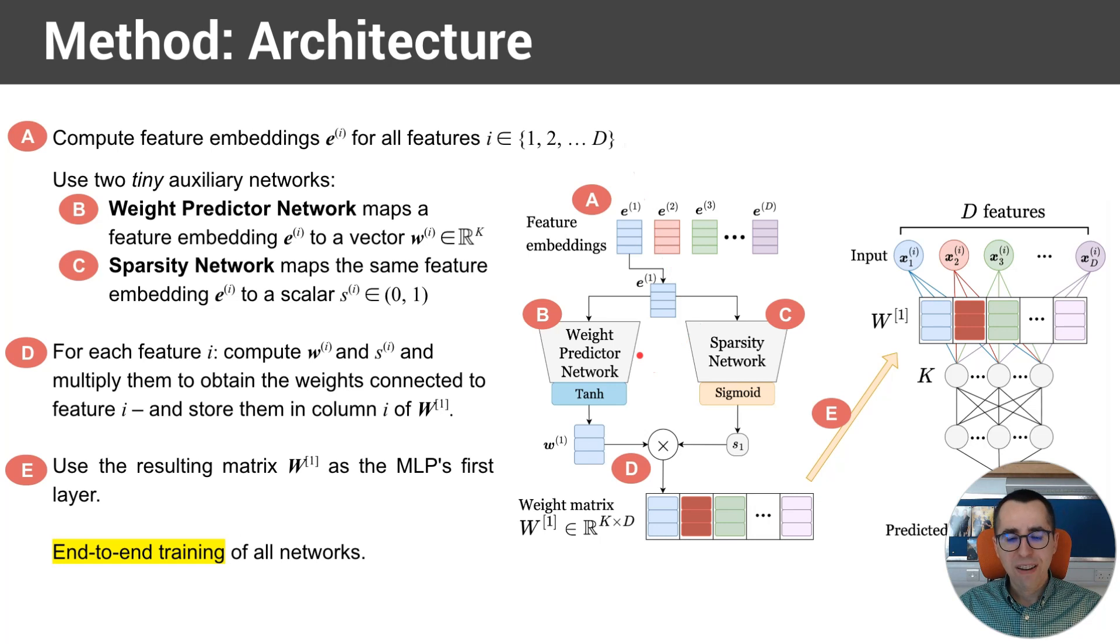Then, we use two very tiny auxiliary networks. One is a weight predictor network, and one is a sparsity network. Notice that the sparsity network has a sigmoid activation, so it is going to output a scalar between 0 and 1, while the weight predictor network outputs a vector. The size of the vector is the same size as the first hidden layer. And the steps are that we take every feature and we take the feature embedding and input it simultaneously through the weight predictor network and to the sparsity network. The outputs of those networks are multiplied.